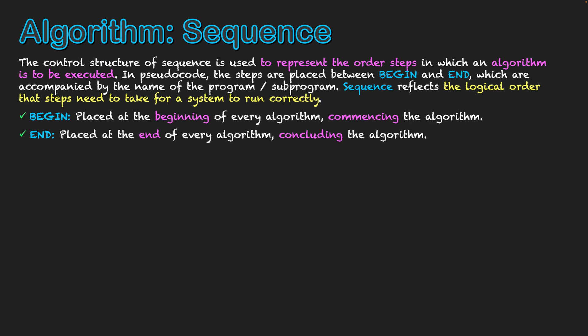They're used in every algorithm, and both of those keywords are accompanied by the name of the program. We write that next to it so we know through our documentation which program we're referring to with the specific algorithms we're writing out.